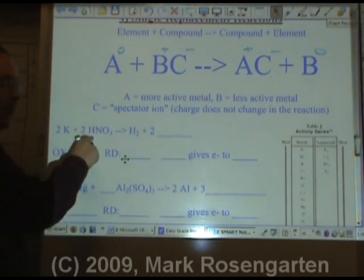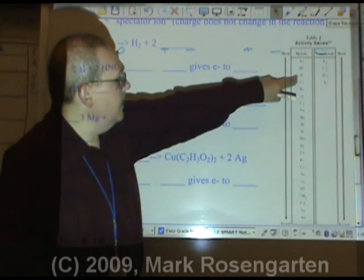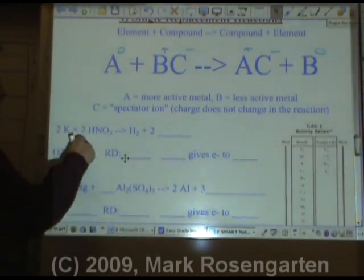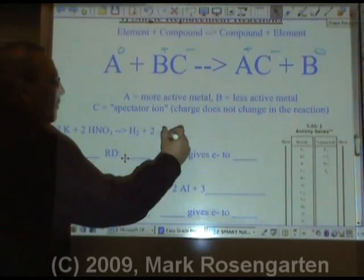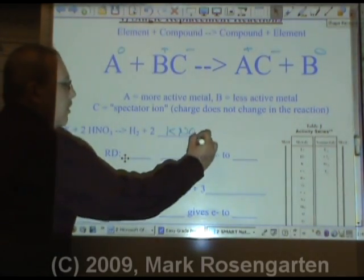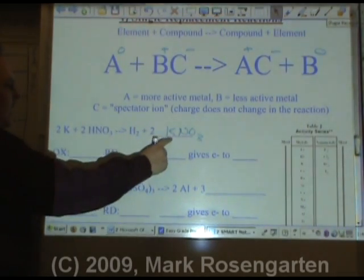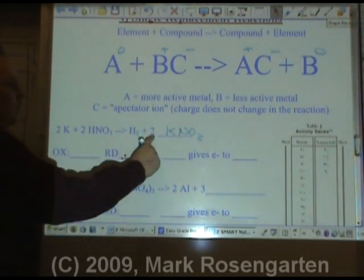For example, potassium is more active than hydrogen. Therefore, potassium replaces hydrogen to form KNO3. Let's make sure the formula is written properly. Two Ks, two Ks. Two nitrates, two nitrates. It's all good.